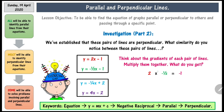If you multiplied the gradient of the first line, which is 2, and the second one, which is negative one-half, you get an answer of minus 1. Similarly, if you multiply the gradients of the second two lines, you'd get minus one-quarter times by 4, which is also minus 1.